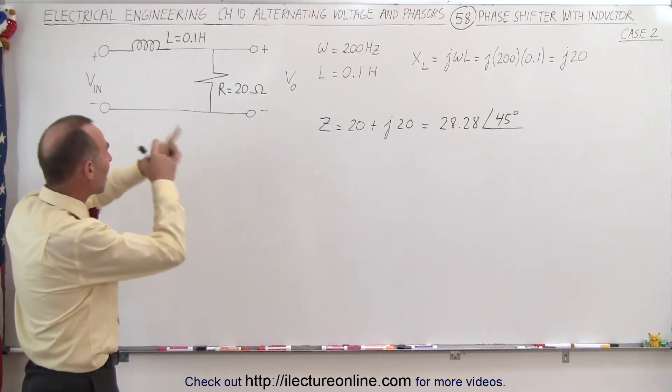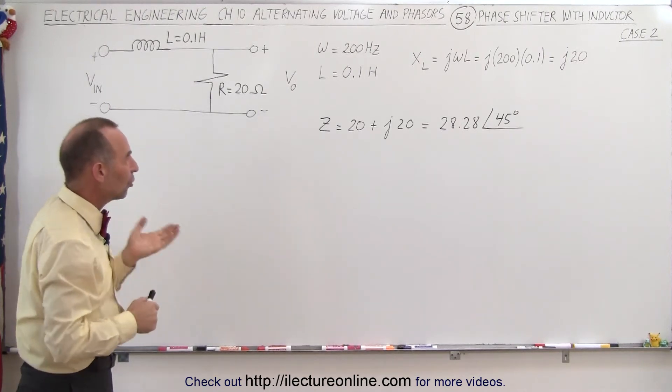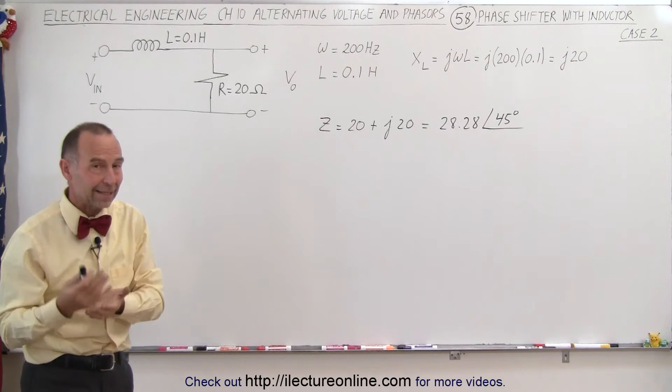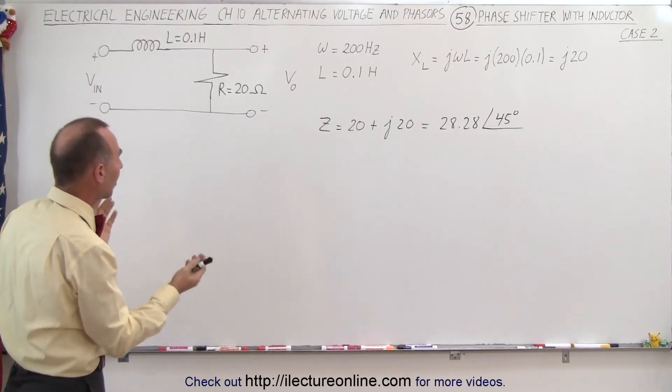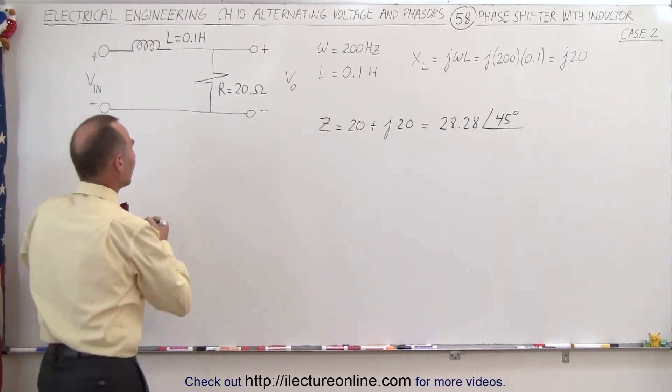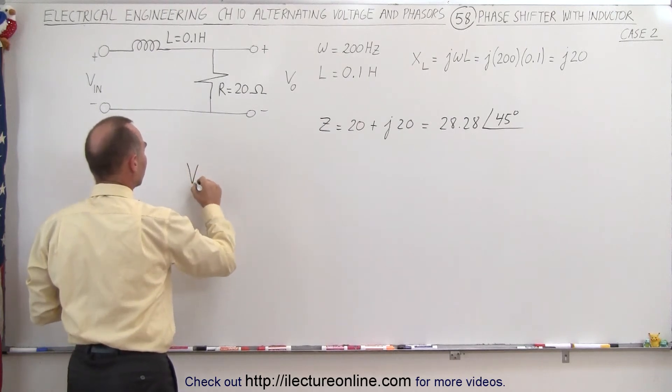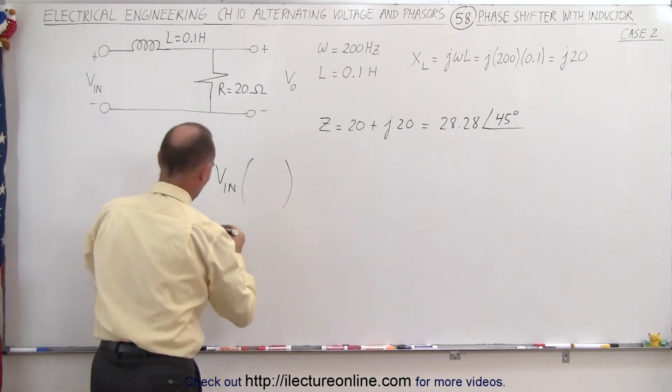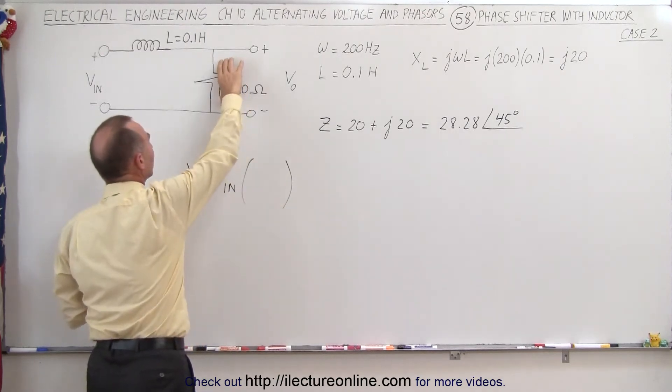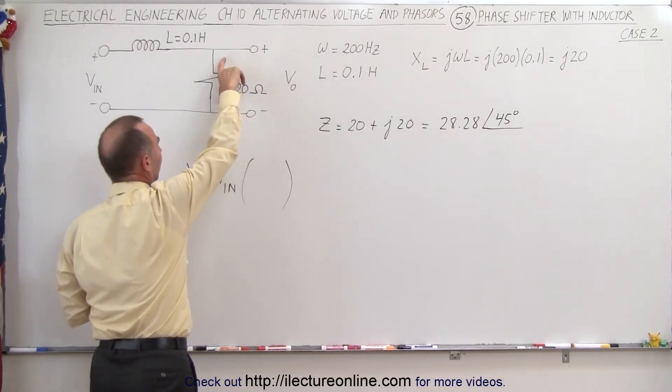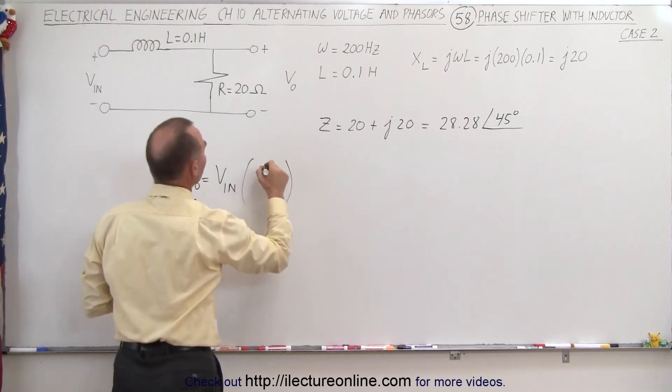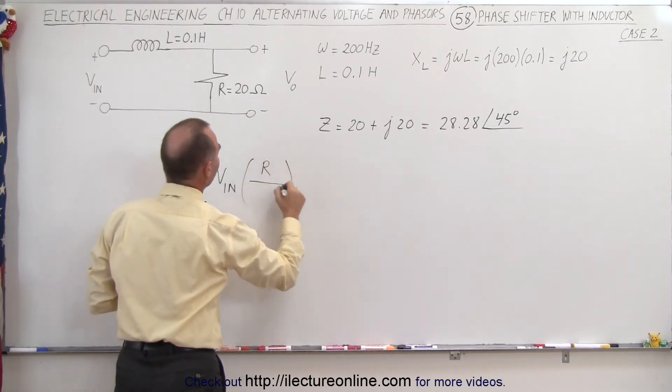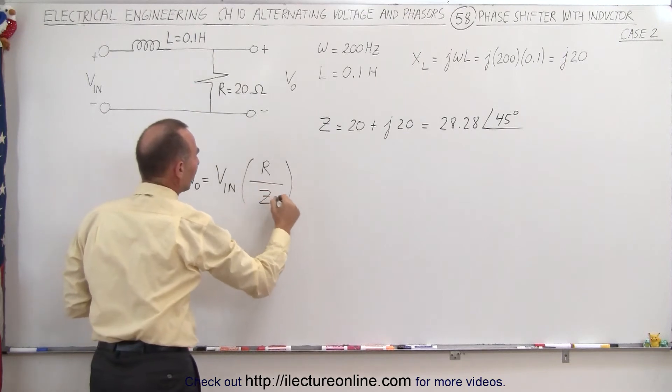But since we now have exchanged the position, notice what happens when we try to calculate the output voltage. Again, we use the concept of the voltage divider. We can say that V out is equal to V in times the ratio of the voltage here. Of course, we're going to take the voltage across the resistor. That would be R divided by the total impedance of the circuit, which is Z.